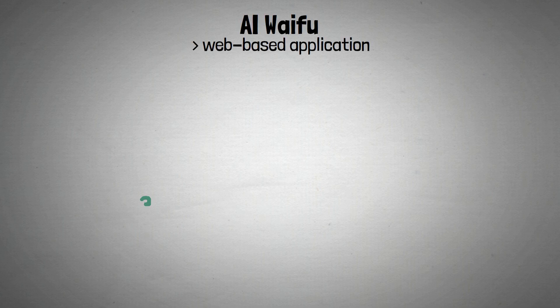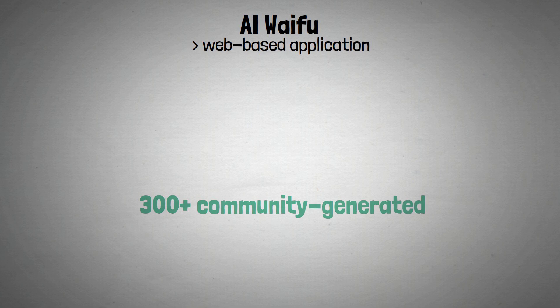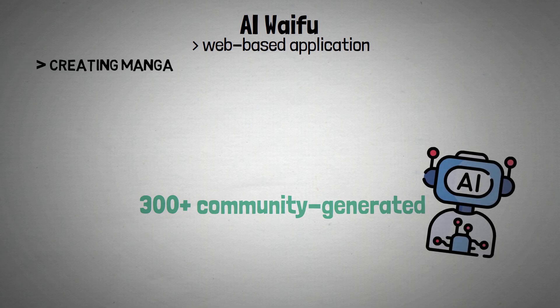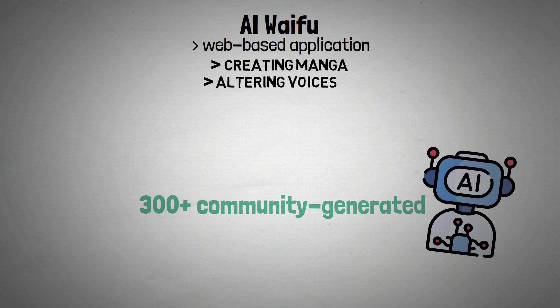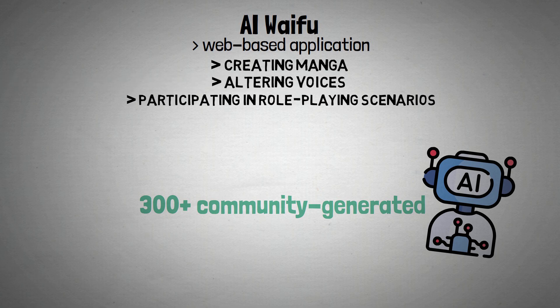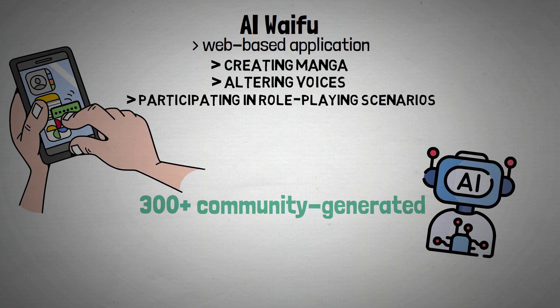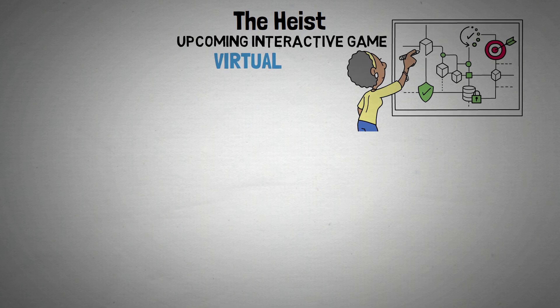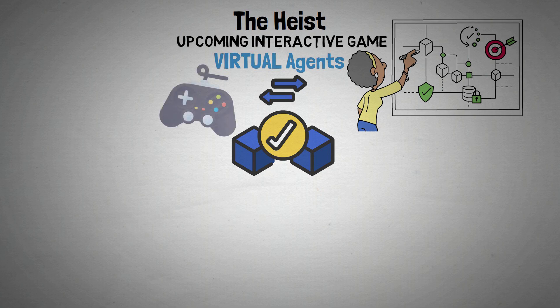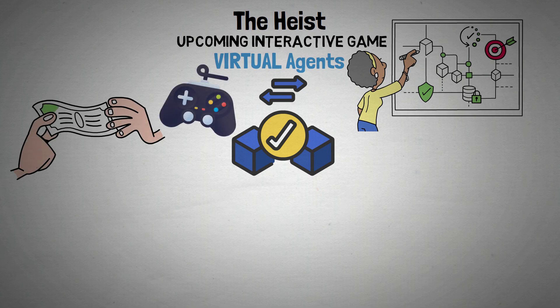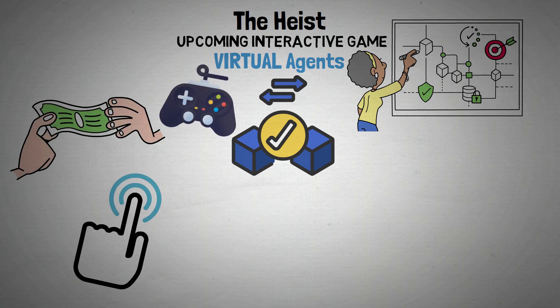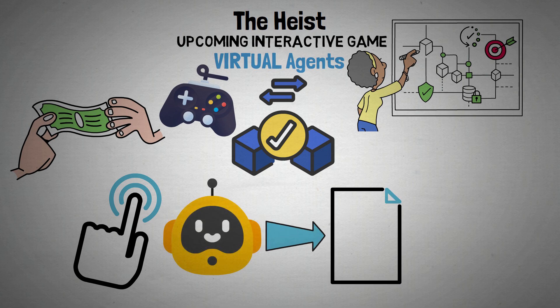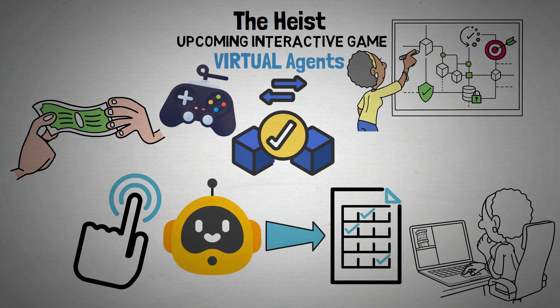AI Waifu is a web-based application with more than 300 community-generated AI characters. By creating manga, altering voices, and participating in role-playing scenarios, users can have personalized interactions. The Heist is an upcoming interactive game that will demonstrate how virtual agents can handle on-chain transactions in a game where economy is important. Players can interact with AI agents, persuading them to carry out tasks and seeing how they make decisions in real time.